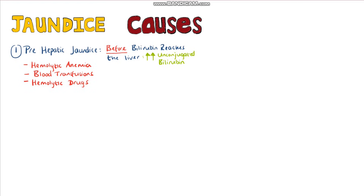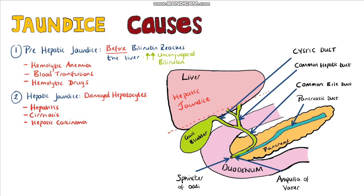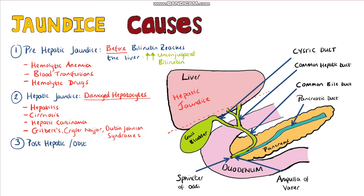Hepatic causes are due to either having damaged hepatocytes, which is the case in hepatitis, cirrhosis, or hepatic carcinoma. Alternatively, you have problems in conjugating or secreting bilirubin into the bile, such as in Gilbert's, Crigler-Najjar, or Dubin-Johnson syndromes.